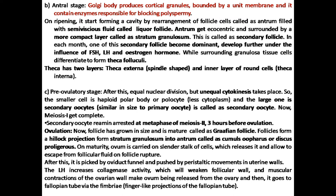In the uterine walls, peristaltic movement occurs, due to which the secondary oocyte is pushed towards the uterus. Near the fallopian tube, there are fimbriae. These fimbriae in the fallopian tube are responsible for uptaking the secondary oocyte, so it is taken up and moves towards the uterine wall.